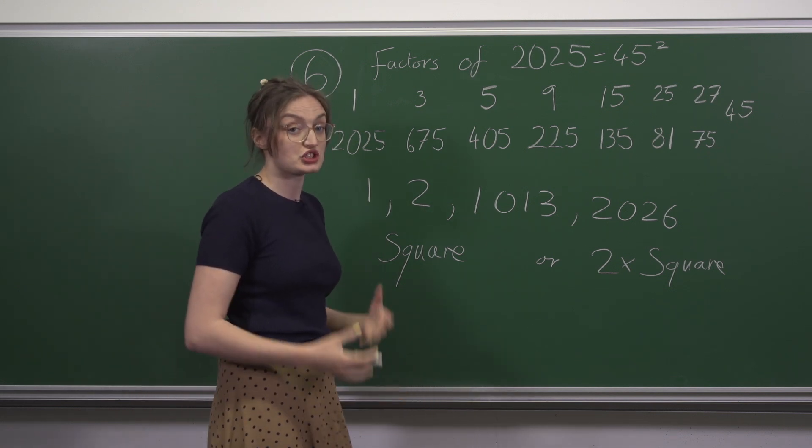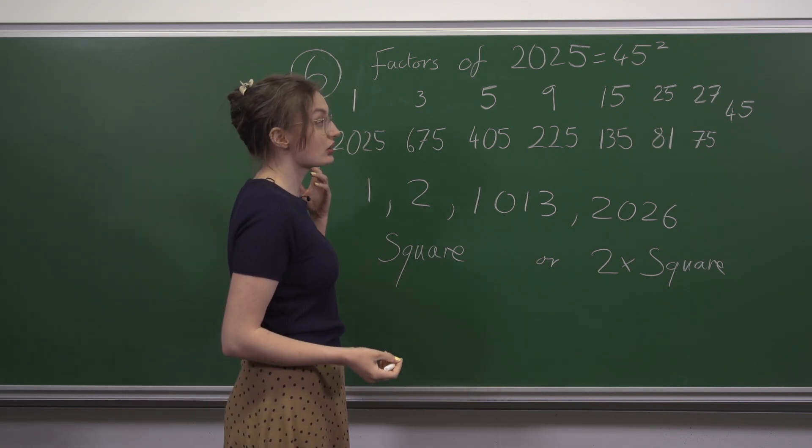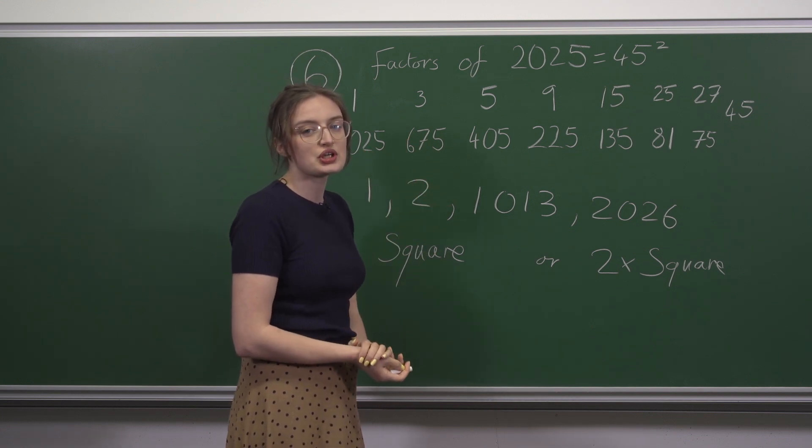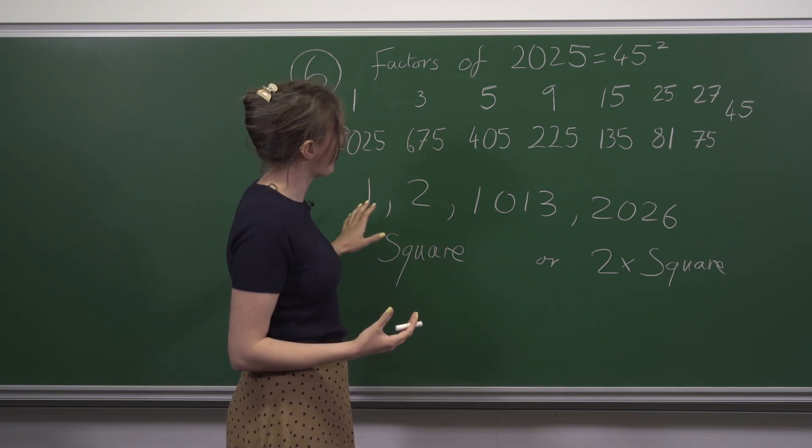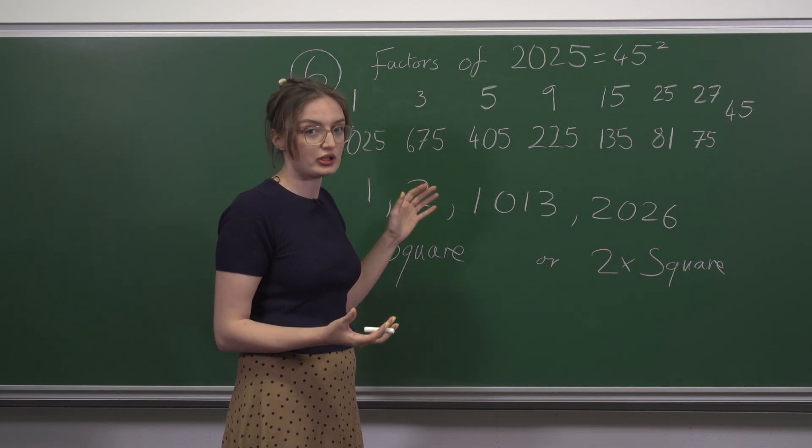Now that we know what our number must look like, we can go back to the original question, which was what's the next number where factors sum to an odd number?